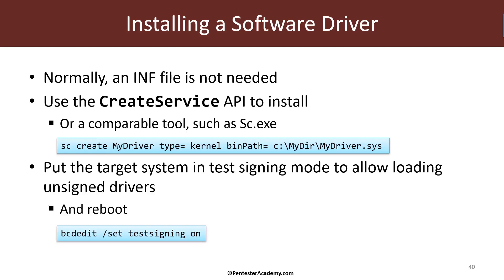The second thing we have to do for the machine we're actually testing on is to put the machine in test signing mode, because our driver is not going to be signed since we're currently just developing it. Even if we do have a proper certificate to sign the driver, we typically don't do that while developing. So we need to put the target system in test signing mode where we can install unsigned drivers. The way to do that is to open a command window with admin privileges and issue the command bcdedit /set testsigning on and then restart the system. We only have to do that once.